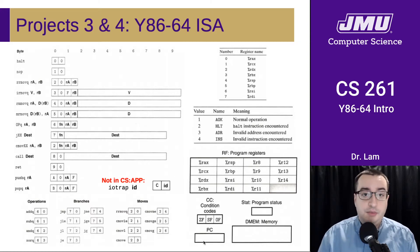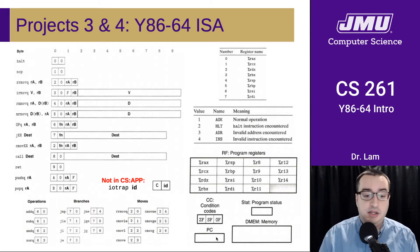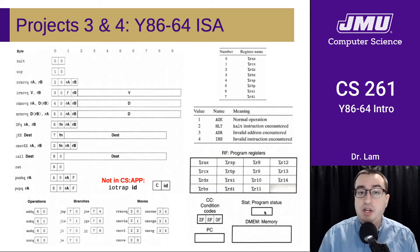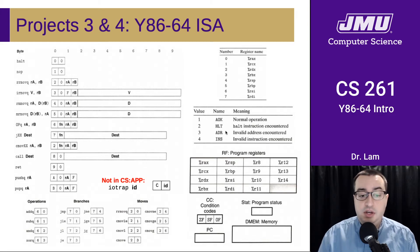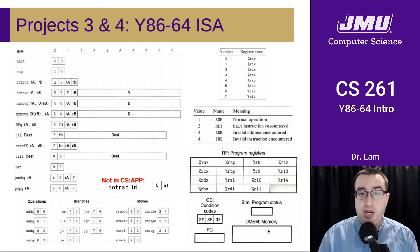We also have a program counter, which is the same as our IP in x86. We have a status code indicator that is going to be one of four values: OK, halt, invalid address, or invalid instruction. And then we have some region of memory that we can read from and write to.